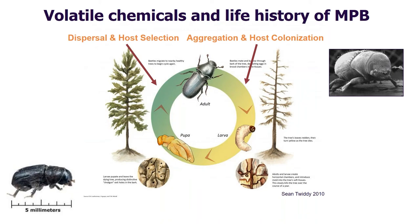There are two parts of the volatile chemicals that are important for mountain pine beetle. First are the volatiles from the host trees — secondary components of host chemistry, tending to be monoterpenes, also used in tree defense. The second part are pheromones: beetle-produced volatile chemicals that act as communication between mountain pine beetles. Both of these chemicals together are important during key portions of the mountain pine beetle life cycle, such as dispersal and host selection, and aggregation and host colonization — and it is during these portions that we can exploit these chemicals to monitor and manage mountain pine beetle.